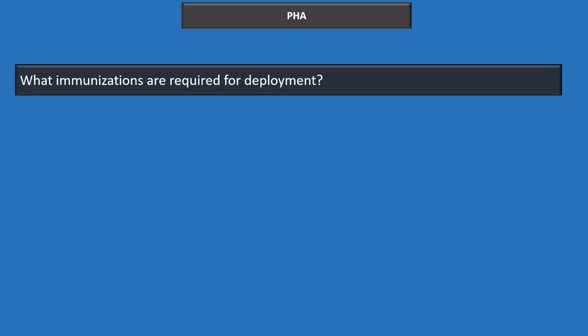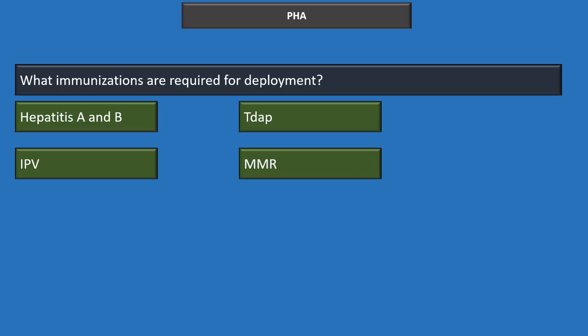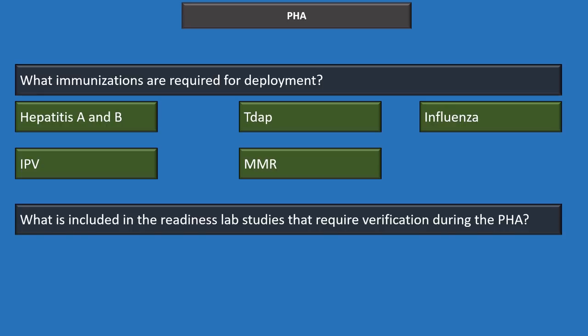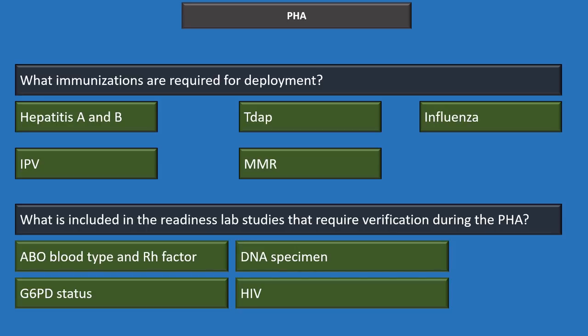Immunizations required for deployment (non-region specific) are: hepatitis A and B, inactivated polio vaccine, Tdap, MMR, and influenza. Readiness lab studies required for PHA verification include ABO blood type with Rh factor, G6PD status, DNA specimen, and HIV. Dental classifications 1 and 2 are considered worldwide deployable. The annual dental exam is a type 2 exam.